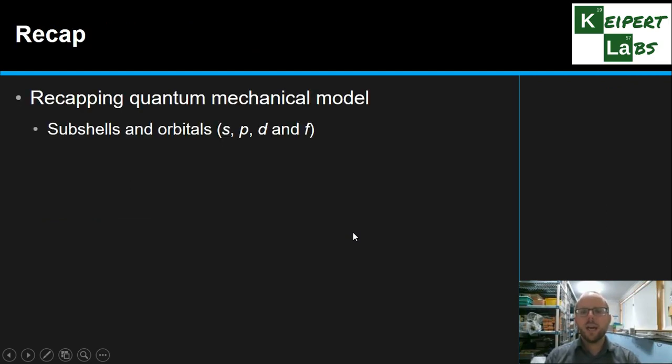OK, so we recapped the quantum mechanical model, looking at its subshells and orbitals, S, P, D, and F, seeing that they're the places where electrons can be found, or the boundaries, and these places where electrons might be, and that they take up a particular shape. We saw that we reminded ourselves about our standard electron configuration using numbers and commas, but we recognized that that doesn't really fit with the quantum mechanical model anymore. It's too simplistic.